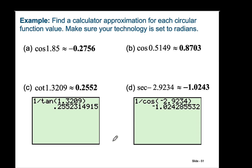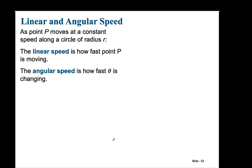Continuing to talk about circular functions, we have two different speeds addressed in this part of the chapter: linear speed and angular speed. As a point P moves at a constant speed along a circle of radius R, the linear speed is how fast point P is moving, and the angular speed is how fast theta is changing.